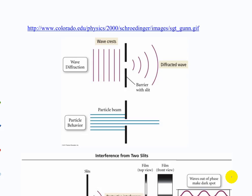So first of all, let's start originally. What is the difference between a wave and a particle? How can you tell that those are actually different? How do we tell that a wave has a different behavior from a particle? Anybody know?